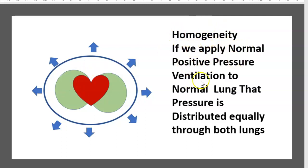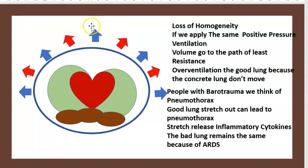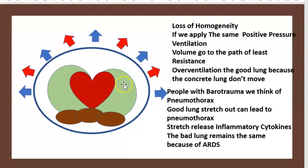If we apply normal positive pressure ventilation to a normal lung, that pressure is distributed equally through both lungs. With loss of homogeneity, if we apply the same positive pressure ventilation, volume comes to the path of least resistance — the normal lung — because there is less resistance there. This leads to over-ventilation of the good lung, as the consolidated lung doesn't move. This can lead to barotrauma and pneumothorax.